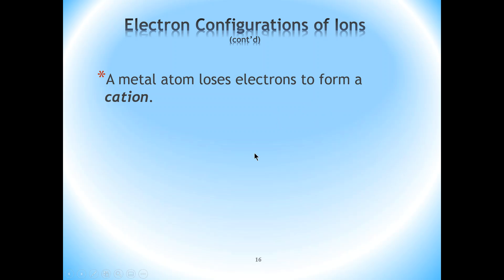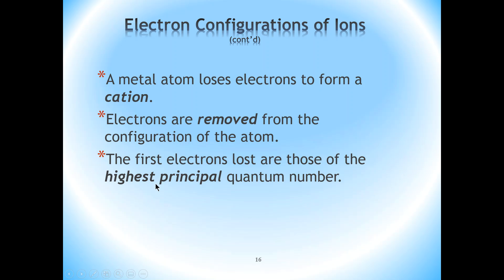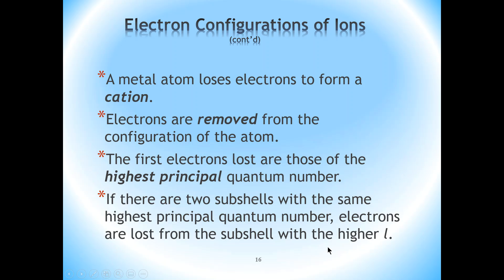In the case of the formation of cations, it can become tricky. Whenever a cation is formed from an atom, that is as a result of the atom losing electrons — which is usually what metals do — electrons must be removed from the highest energy shell, or the shell with the highest n value. If there are two sub-shells with the same highest principal quantum number, then you start removing electrons from the sub-shell with the higher l value.